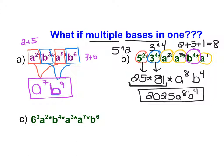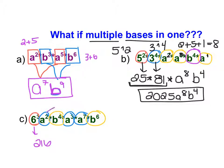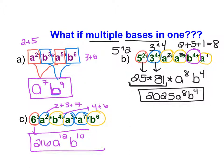In the last example, we have 6 to the power of 3, and multiple A's and B's as bases. Starting with 6 to the power of 3, that equals 216. For the A's, we have exponents 2 plus 3 plus 7, giving A to the power of 12. For the B's, we have 4 plus 6, giving B to the power of 10. So the answer is 216 A to the 12th, B to the 10th.